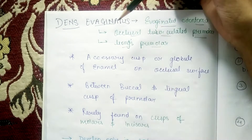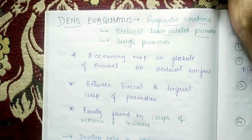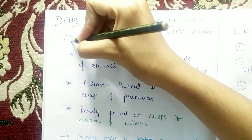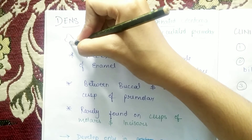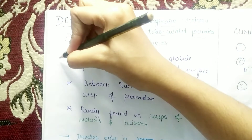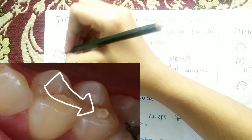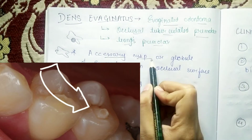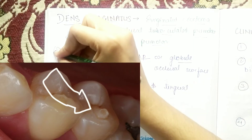Dens Evaginatus is similar to enamel pearls. In enamel pearls, there is a globule found between the crown and the root of the tooth. Similarly, in Dens Evaginatus there is a globule of enamel visible on the occlusal surface of the tooth.